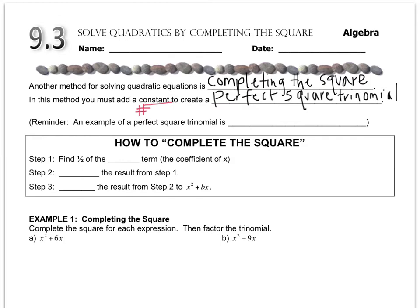And a perfect square trinomial looks something like this: x squared plus 10x plus 25. And the reason that that's a perfect square trinomial is because it's x plus 5 quantity squared. It's something being squared. And in this case, it's a binomial. And in this case, the result is a trinomial. So we call it a perfect square trinomial.